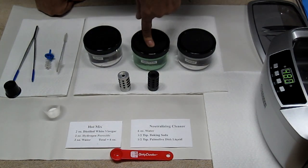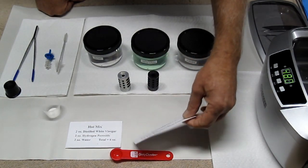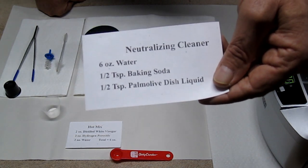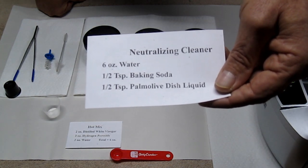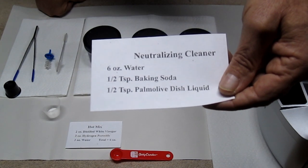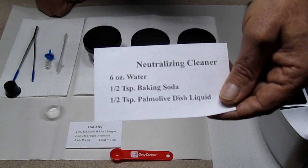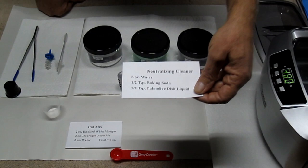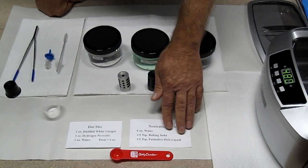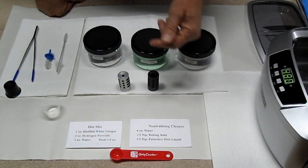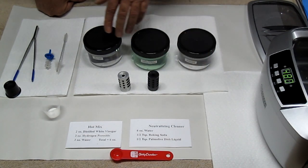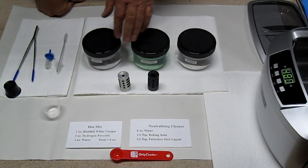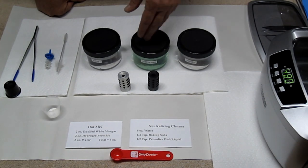This jar is going to be my neutralizing cleaner solution and that's 6 ounces of fresh water, one half teaspoon of baking soda and one half teaspoon of Palmolive dish liquid. And I use the original green. You can use Dawn or any dishwashing detergent, your choice, but this is going to be my neutralizing cleaner. So I'll go from point A to point B to neutralize it before I handle it.